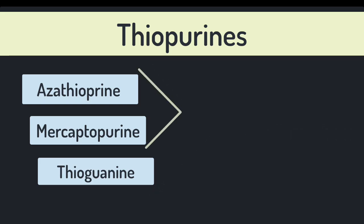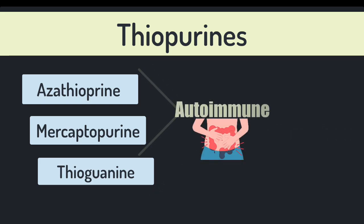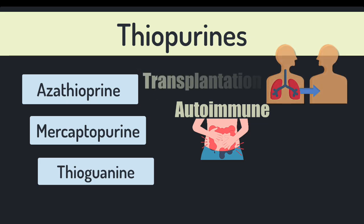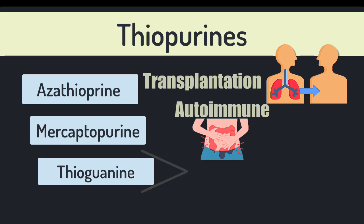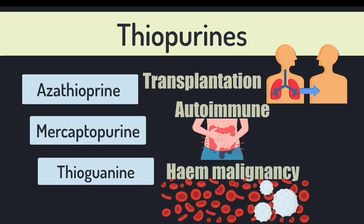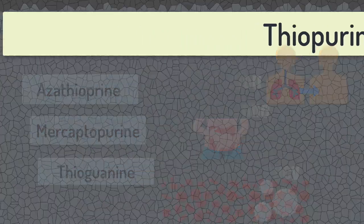Azathioprine and mercaptopurine are used to treat autoimmune disease, and azathioprine is also commonly used in transplant patients to prevent organ rejection. Thioguanine, on the other hand, tends to be prescribed for hematological malignancies. But how do these drugs actually work?